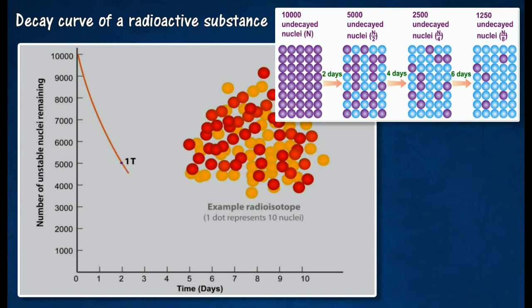Note that the time taken for the activity of the sample to be reduced from 5,000 counts per second to 2,500 counts per second is the same as the time taken for the activity of the sample to be reduced from 10,000 counts per second to 5,000 counts per second, that is, two days. This is also the case for the activity of the sample to be reduced from 2,500 counts per second to 1,250 counts per second.